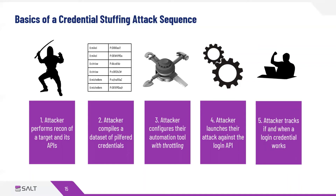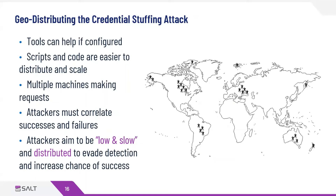Once a working credential is found — likely indicated by an HTTP 200 success message — the attacker has essentially achieved account takeover. Attackers distribute their automated attacks geographically to subvert rate limits and IP address allow and deny lists, with many instances of automation code running, often spun up in the cloud. They typically aim to be low and slow, blending into normal API traffic to look like legitimate user authentications and failures. Since users sometimes forget passwords, failures naturally exist in traffic, making stealthy credential stuffing very hard to detect — which is why account takeover is such a high risk for many organizations.